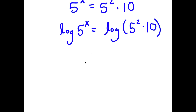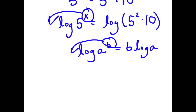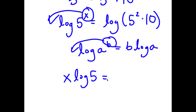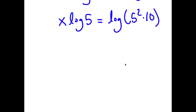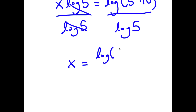An important rule to note is that if I have something in the form log a to the power of b, I can move this exponent b to the front, so this equals b times log a. So with log 5 to the power of x, I can move x to the front. So now I have x times log 5 is equal to log of 5 squared times 10. To find x, I divide both sides by log 5, so these two cancel out. And I get x is equal to log of 5 squared times 10 over log 5.